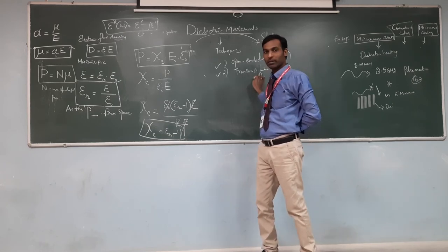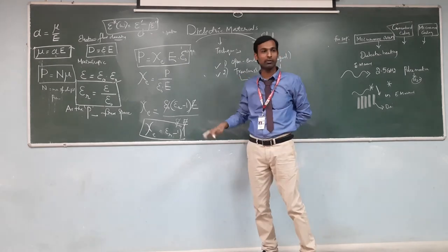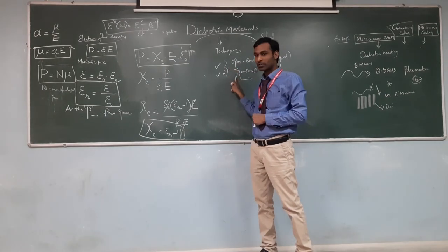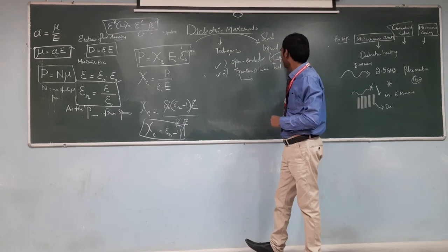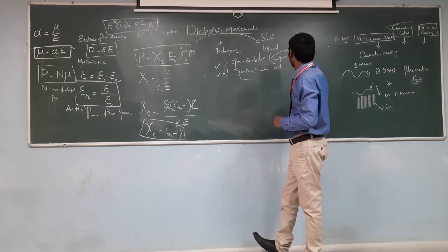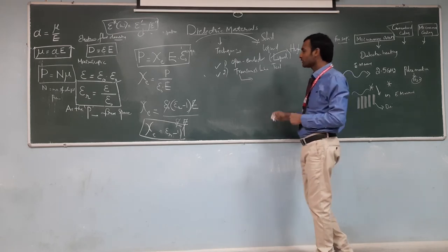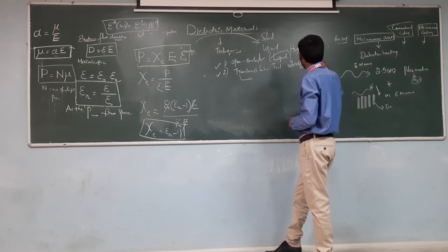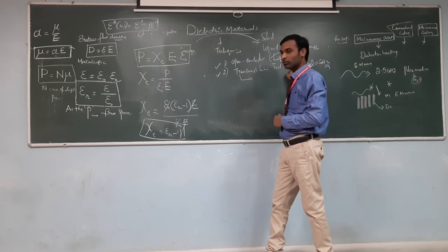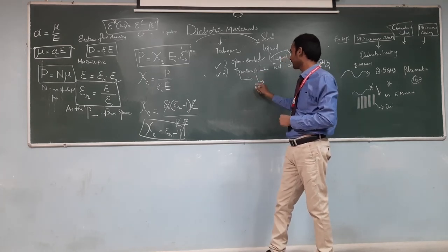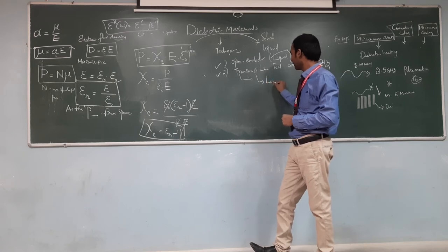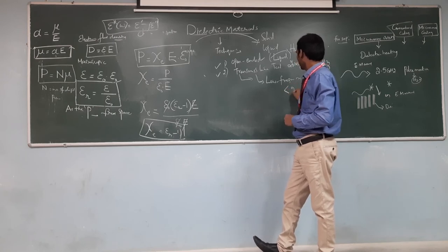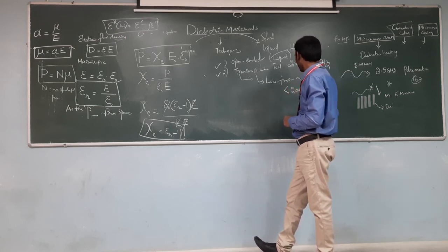The transmission line method is also applicable to measuring dielectric properties of liquid materials. The difference between the two: the open-ended coaxial probe method is applicable to a very high range of frequencies — its frequency range is nearly 20 MHz to 20 GHz.